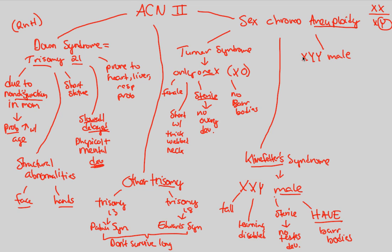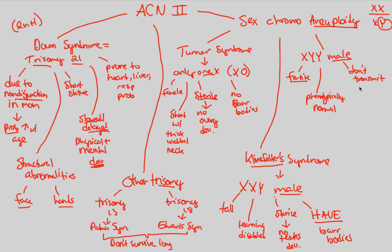You don't need to know a specific name for XYY individuals. These individuals are actually fertile, and you don't really even call this a syndrome simply because these people are relatively phenotypically normal. They are fertile, meaning they can have offspring. Interestingly, they actually don't even transmit that extra Y — it's just there. You would not be able to tell if a male is XYY just by looking at them; you would have to do a genetic analysis. That concludes our discussion on abnormalities in chromosome number.